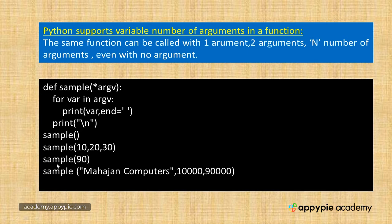Then I'm calling sample(90) — this time instead of three arguments, I'm passing only one argument. So args would contain only one element, and this loop will run only once. The value 90 will be printed on the screen.